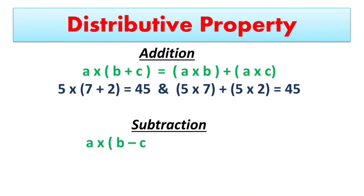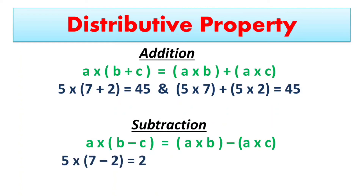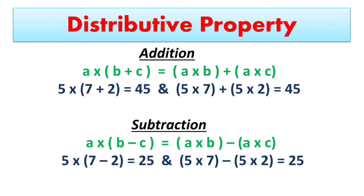This is also true for subtraction, as A multiplied by (B minus C) equals (A multiplied by B) minus (A multiplied by C). For example, 5 multiplied by (7 minus 2) equals 25, and (5 multiplied by 7) minus (5 multiplied by 2) gives 25. This means distributive property is true for addition and subtraction.